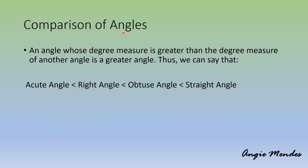Now how do we compare angles? An angle whose degree measure is greater than the degree measure of another angle is a greater angle. So we can say that an acute angle is smaller than a right angle, a right angle is smaller than an obtuse angle, and an obtuse angle is smaller than a straight angle. For example, if an acute angle is 30 degrees, it is less than a right angle of 90 degrees. A right angle is less than an obtuse angle since an obtuse angle is more than 90 degrees, and an obtuse angle is less than a straight angle of 180 degrees.